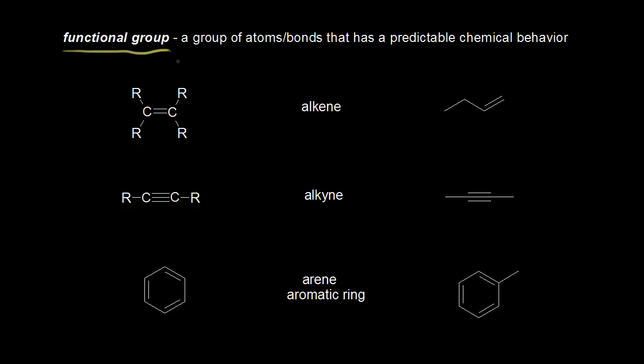A functional group is a group of atoms that has a predictable chemical behavior. There are many functional groups in organic chemistry. I'm going to cover some of the more common ones, the ones you would have to know for your class.